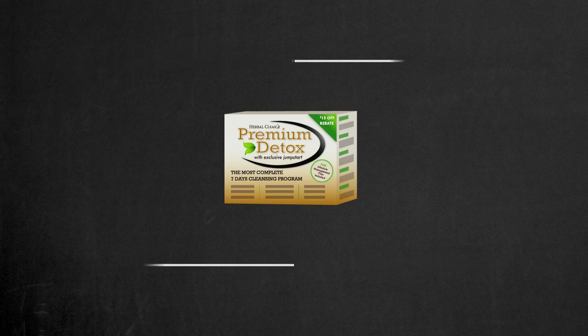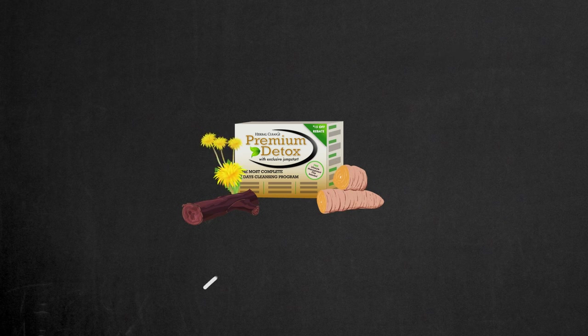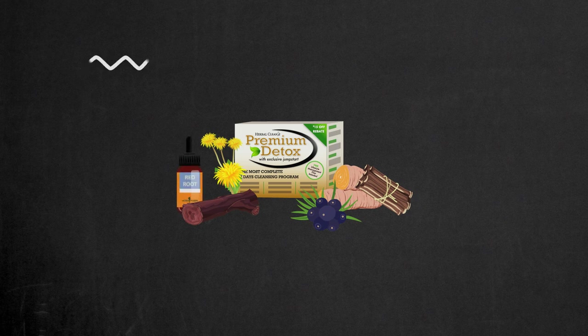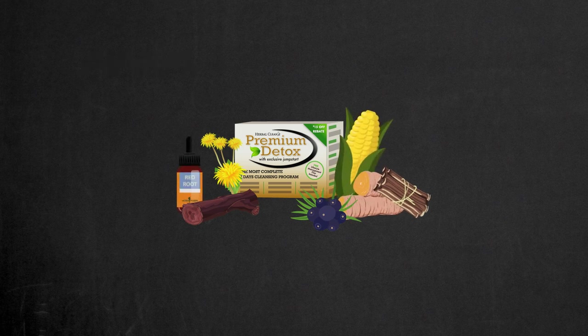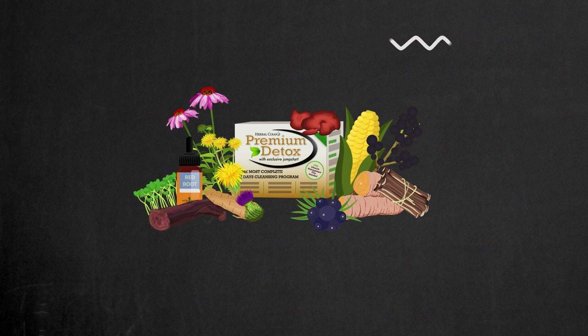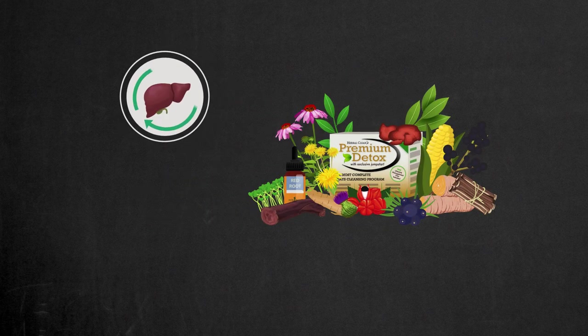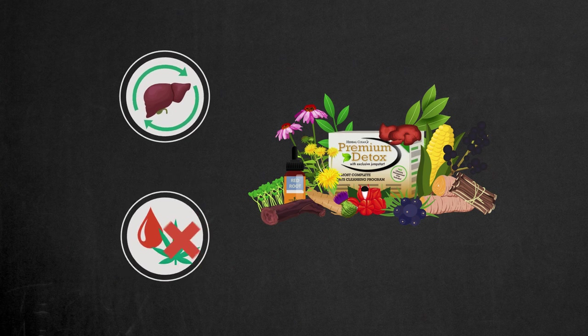Let's look at the ingredients in this kit. It contains red root, turmeric root, dandelion leaf extract, juniper berry, licorice root, red root extract, corn silk, ligustrum berry, burdock root, reishi mushroom, echinacea, alfalfa, ligustrum, guarana, and green tea. These are antioxidants that will improve liver function and remove the metabolites from your blood.